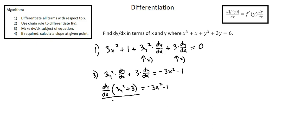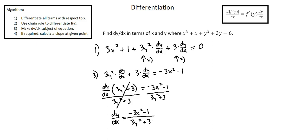Finally, we divide both sides by 3y squared plus 3. The 3y squared plus 3 in the numerator and denominator cancels on the left, giving us dy over dx equals negative 3x squared minus 1 over 3y squared plus 3. Step 4: if required, calculate the slope at a given point. We haven't been given a point, so we've completed our requirements. Note that when calculating slope at a given point in an implicit derivative, we need both an x and y coordinate to input into the expression.